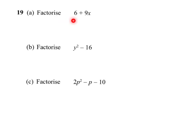Some factorising to do — each one gets slightly harder than the one before it. First one is fairly easy: factorise 6 plus 9x. Well, 3 goes into 6 and it goes into 9, so take your 3 out. You need a 2 to give you the 6, and you're going to need 3x to give you the 9x.